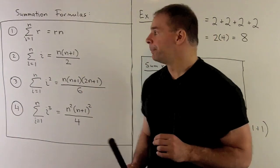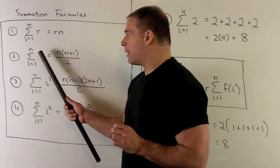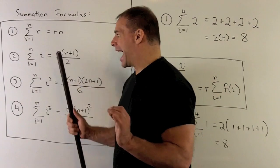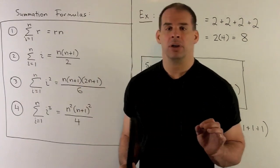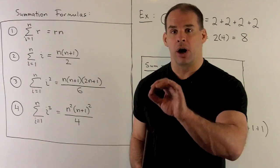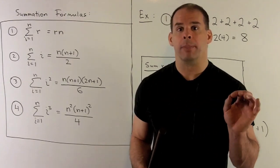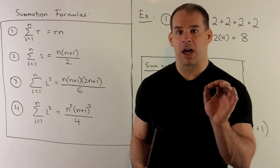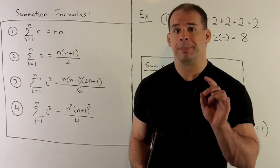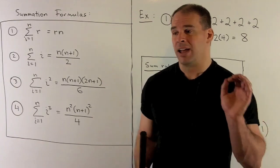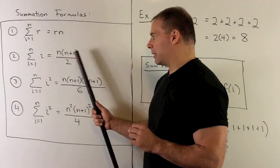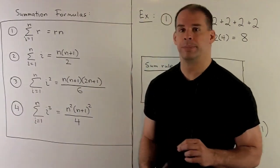The next formula is the sum as i goes from 1 to n of i. For i, we put our number in and our number comes right out. So we're taking the sum 1 plus 2 plus 3, all the way up through n. And the formula is going to be n times n plus 1, divided by 2.